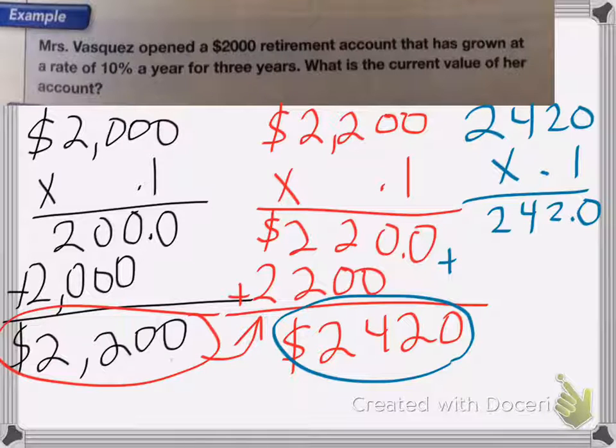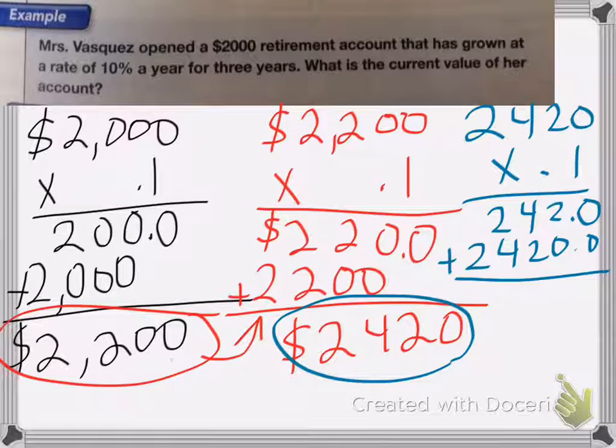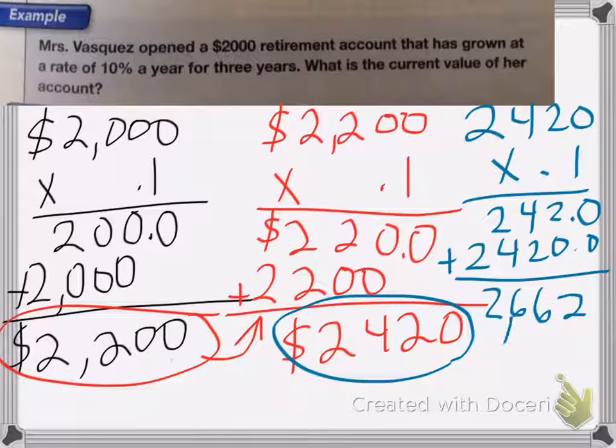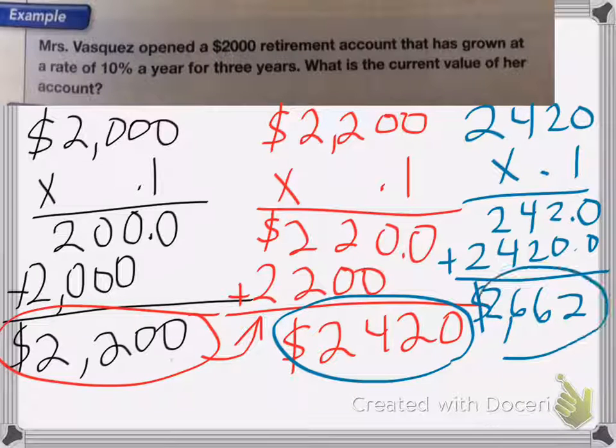Again, add it to my original amount. And I end up with $2,662. And that's how much her amount has grown over the course of three years.